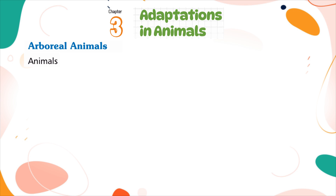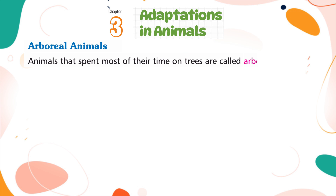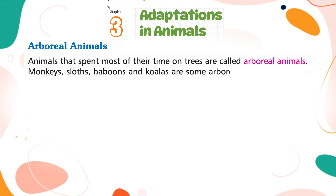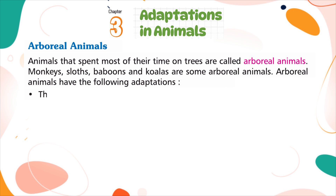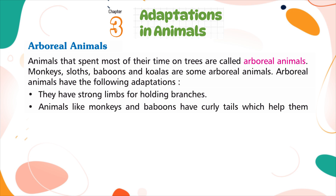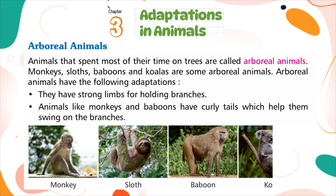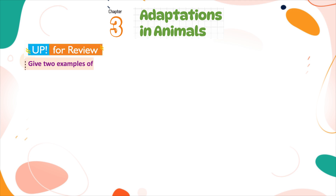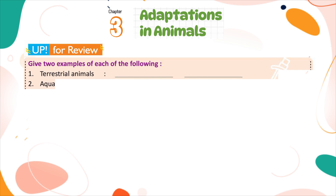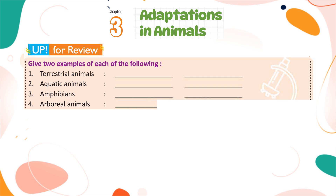Arboreal Animals. Animals that spend most of their time on trees are called arboreal animals. Monkeys, sloths, baboons, and koalas are some arboreal animals. They have strong limbs for holding branches. Animals like monkeys and baboons have curly tails which help them swing on branches. Up for review: Give two examples of each of the following — terrestrial animals, aquatic animals, amphibians, arboreal animals, and aerial animals.